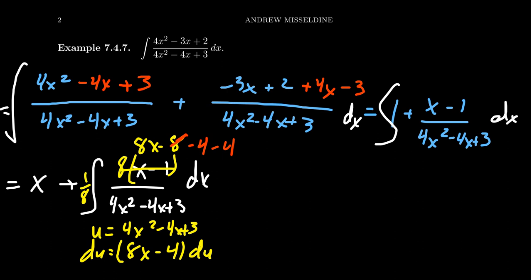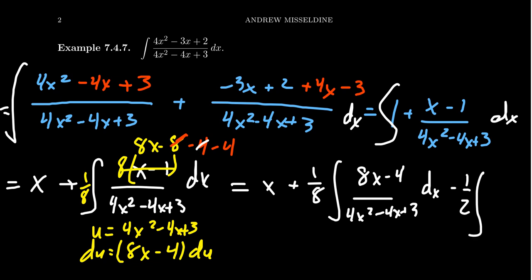So breaking this up a little bit further, x plus 1/8 the integral of 8x minus 4 over 4x squared minus 4x plus 3 dx. And then the last part, because we took this negative 4 already, but if you times negative 4 by 1/8, that's just going to be negative 1/2. So we get negative 1/2 the integral of dx over this denominator, 4x squared minus 4x plus 3.